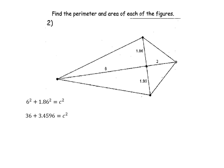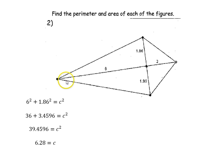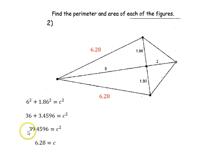6 squared is 36, and 1.86 squared is 3.4596, giving us c² = 39.4596. We want c, not c squared, so we take the square root and find c = 6.28, rounded to the nearest hundredth. So 6.28 is the length of this side. Since this is a kite, the opposite side must also be 6.28 — and you can verify that using the Pythagorean theorem again with the same numbers.